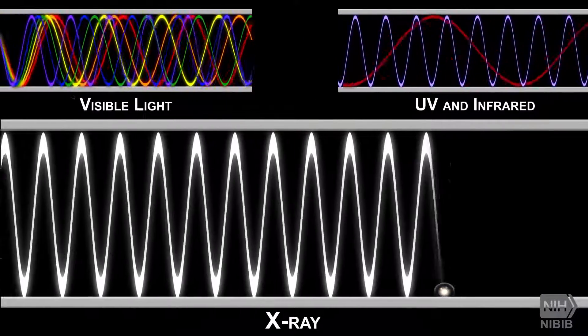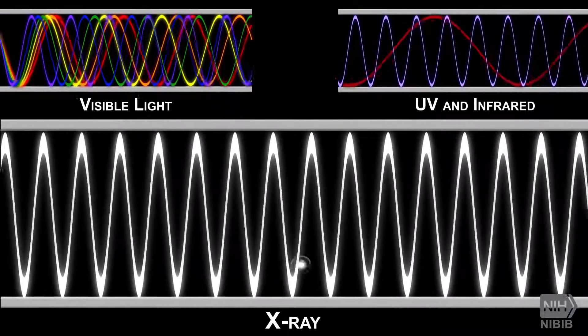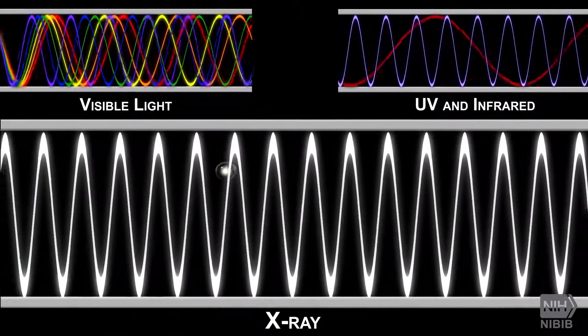X-rays have very short wavelengths that, unlike visible light, are able to pass right through most tissues in the human body.